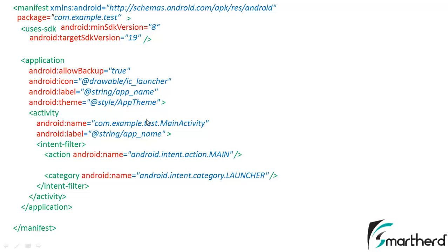This activity tag declares the components or the intents that your MainActivity.java contains. The intent filter defines the action and category tags. Intents are used to invoke any activity. You can invoke your MainActivity.java using the action name android.intent.action.MAIN, and it falls under the category LAUNCHER — meaning when you open your application, the first screen that appears is MainActivity.java.